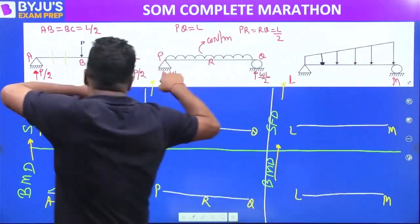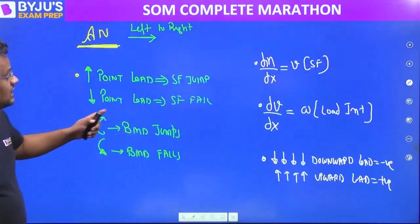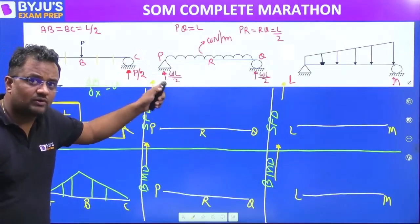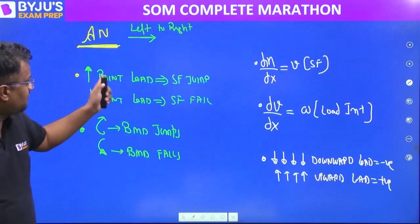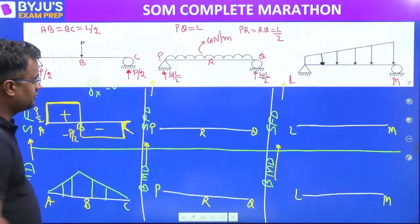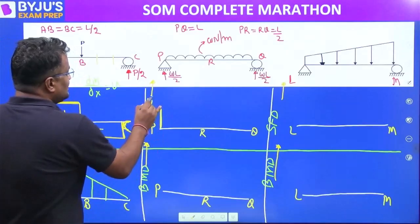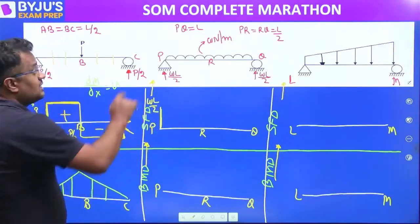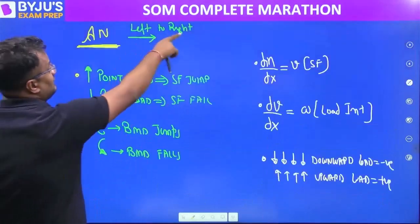Now the second question. We have an upward point load of WL/2 — upward point load, shear force jumps upward by WL/2. We have to go from left to right.